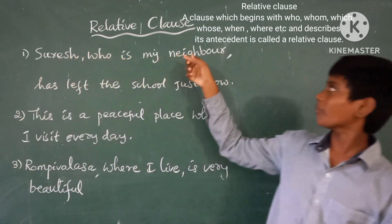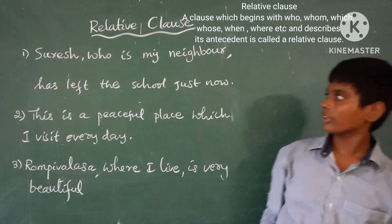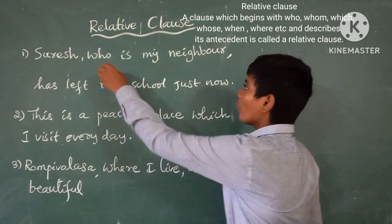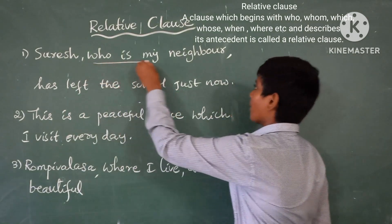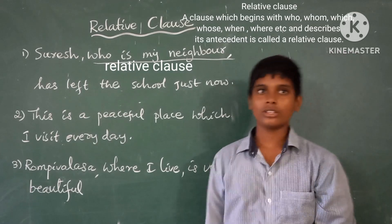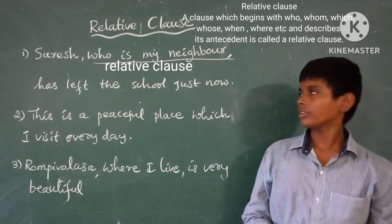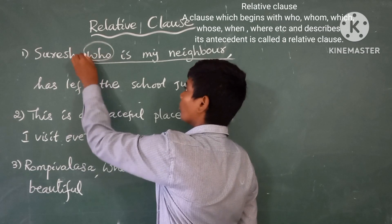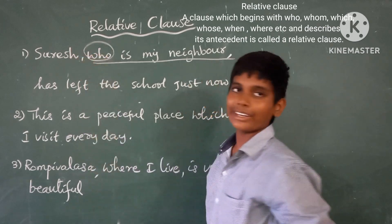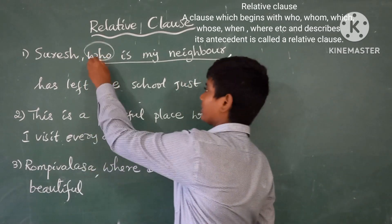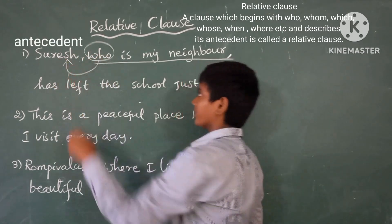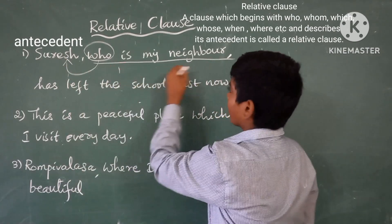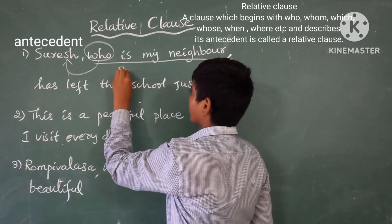Suresh, who is my neighbor. Here, 'who is my neighbor' is a Relative Clause. Why? Because it begins with 'who' and describes its antecedent, Suresh. So 'who is my neighbor' is a Relative Clause.